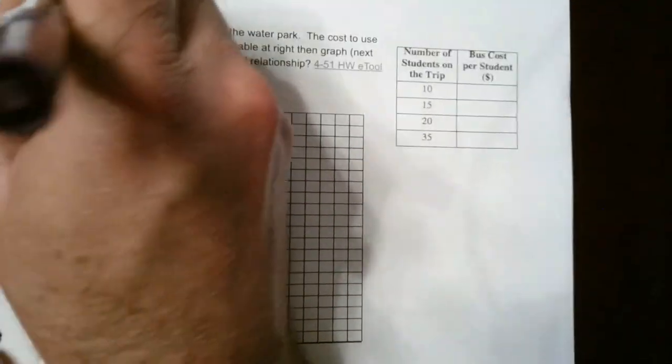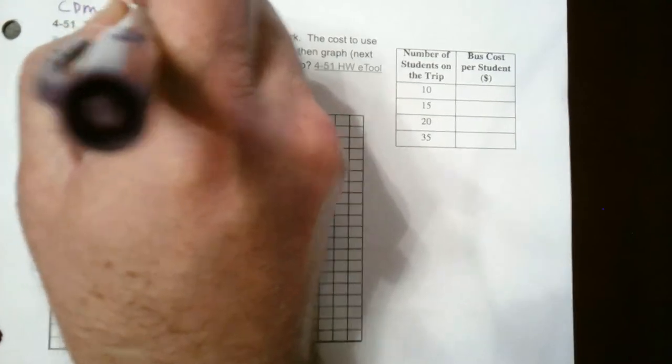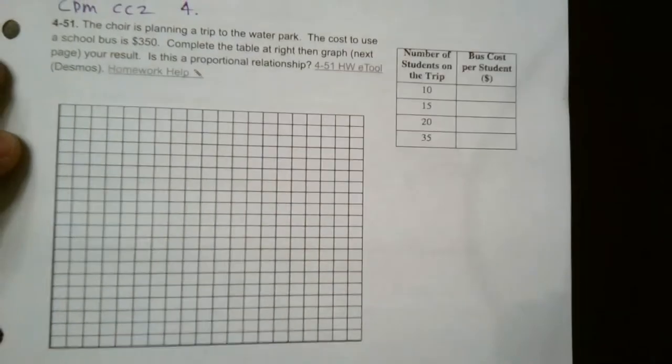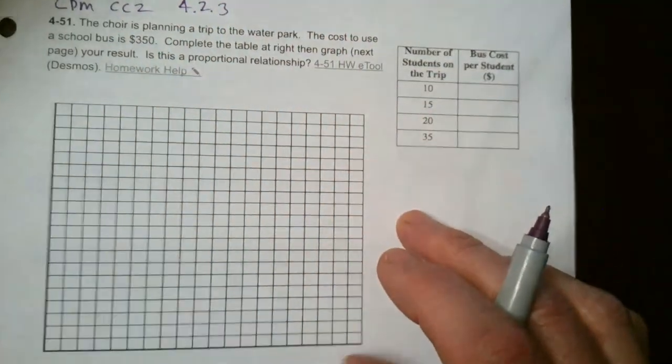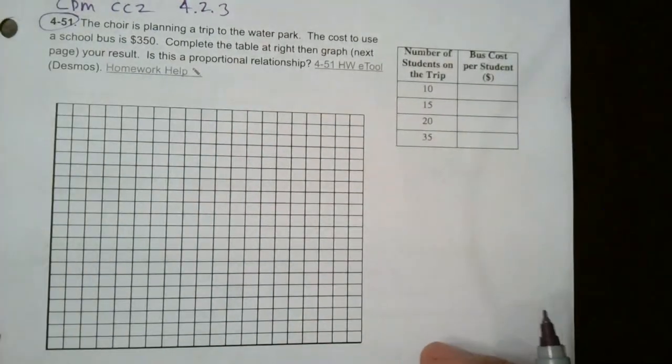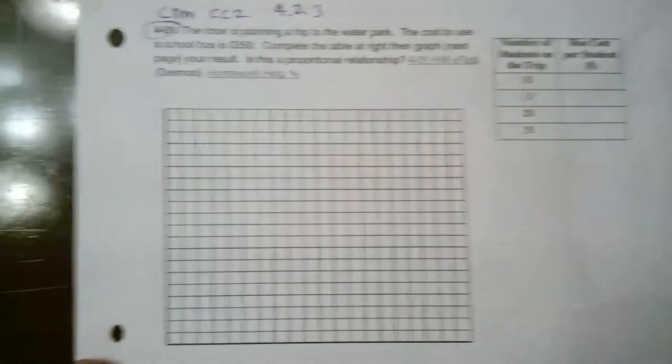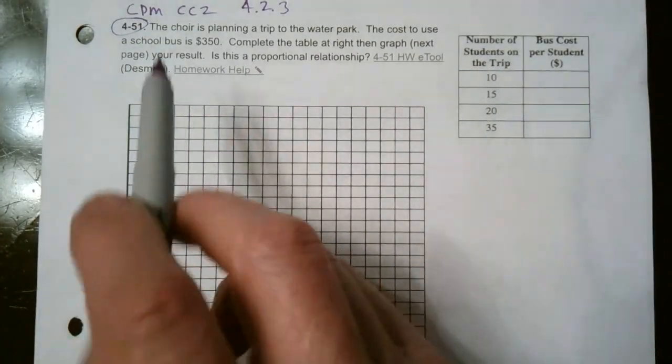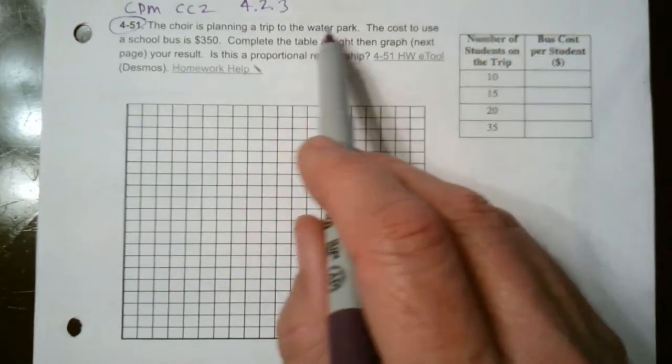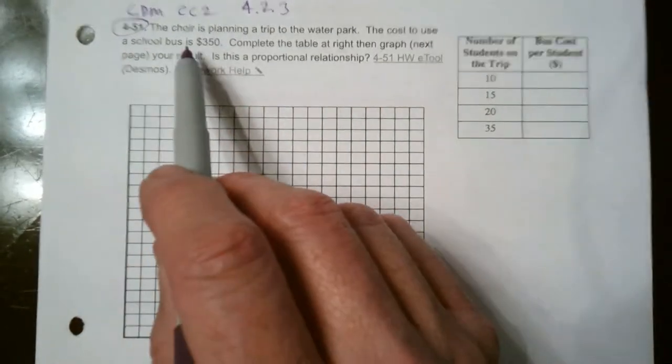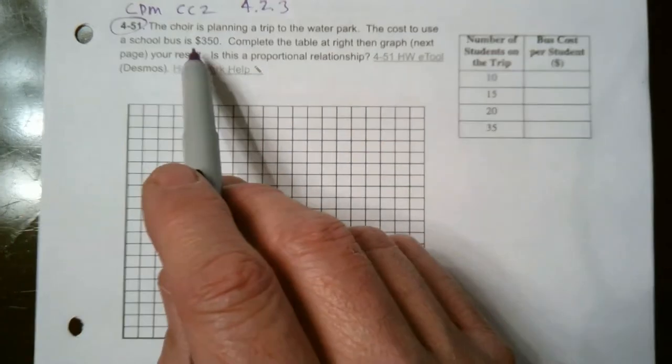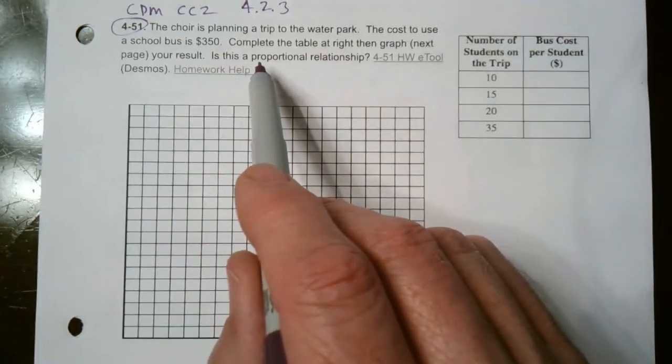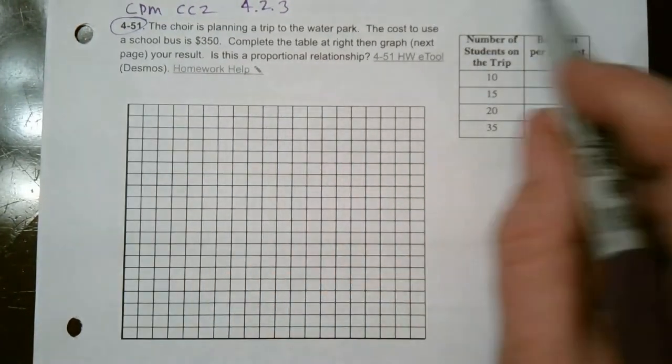So this is from CPM course 2 and this is section 4.2.3 and this is number 4-51 specifically. So let's think through this. Let me read the question. It says, the choir is planning a trip to the water park. The cost to use the school bus is $350. Complete the table at the right, then graph your result. Is this a proportional relationship? So here's our table.